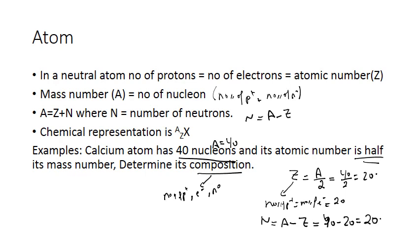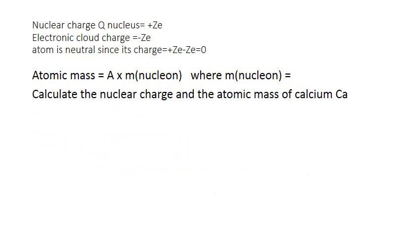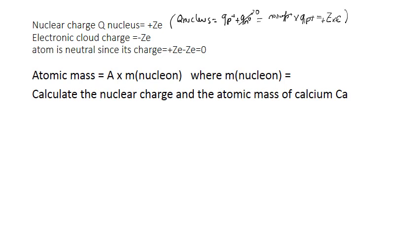To calculate the charge of a nucleus: the charge equals plus ZE, according to the charge of protons. The charge of a neutron is zero, so only protons contribute. Charge of nucleus equals number of protons times the charge of one proton. Since number of protons equals Z, charge of nucleus equals plus ZE, where E is always given in the exercise.